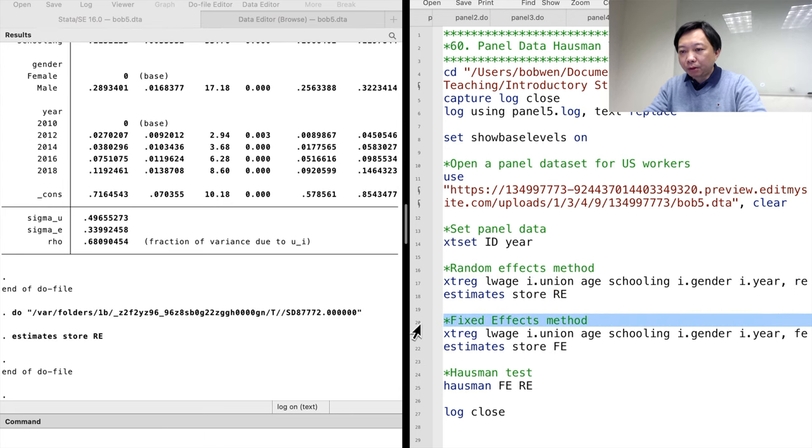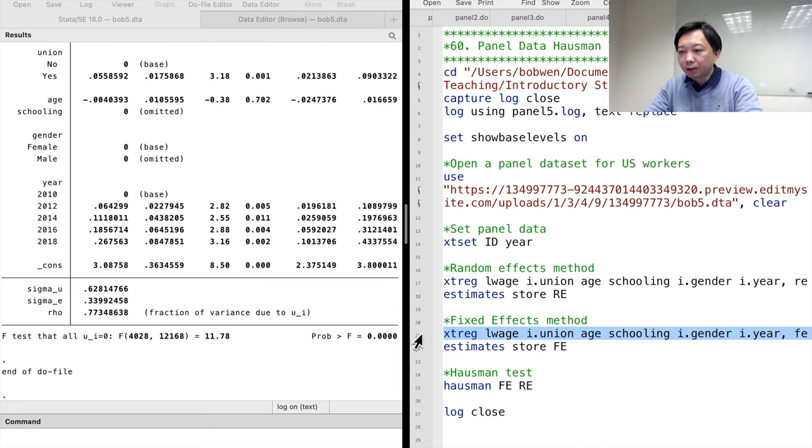Next, we fit the model using the fixed effects method. The FE option specifies the demeaning method we discussed in the last video.